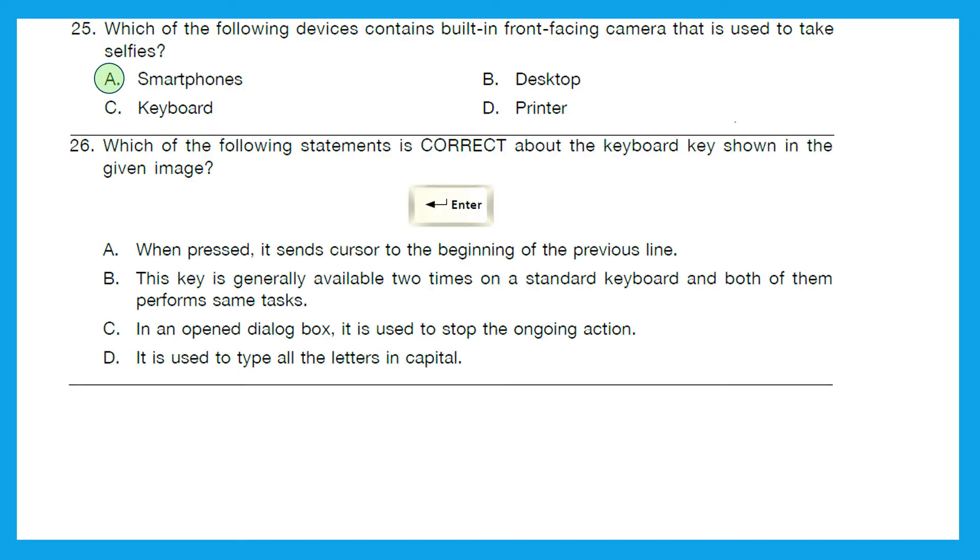Question 26: Which of the following statements is correct about the keyboard key shown in the given image? And it's the Enter key. When pressed, it sends cursor to the beginning of the previous line - option A. B: This key is generally available two times on a standard keyboard and both of them perform same task. C: In an open dialog box, it is used to stop the ongoing action. D: It is used to type all the letters in capital. Which one is correct? The right answer is option B. We have two enter keys on a standard keyboard.